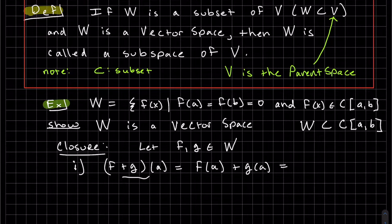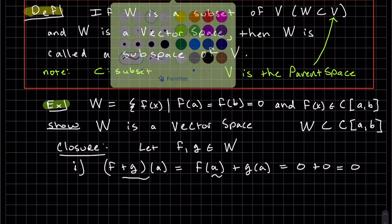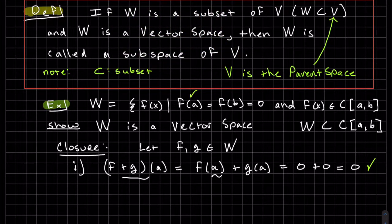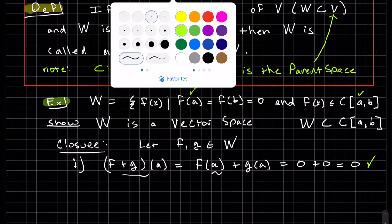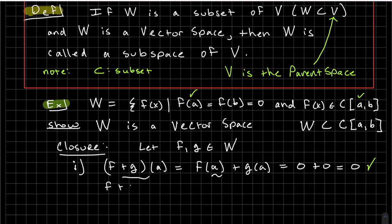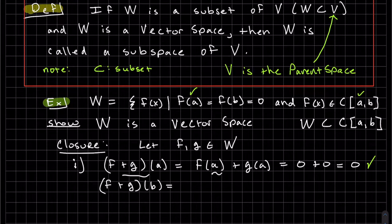Since we know both F and G are in W, that means F of A is 0 and G of A is 0. That's the definition of being in W. So 0 plus 0 equals 0. We have our first condition. The first endpoint is 0 when you plug it in. The last endpoint is going to look the same.